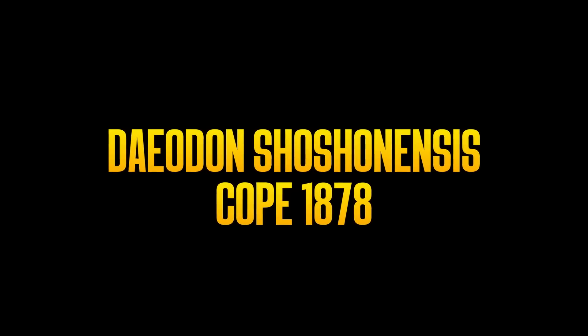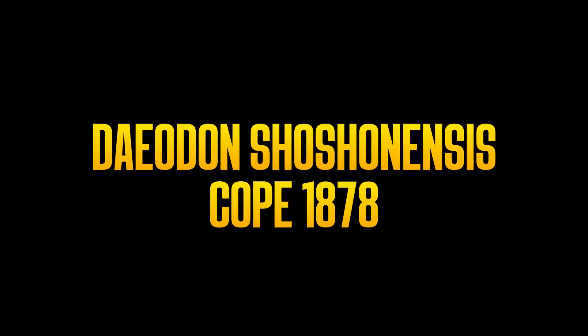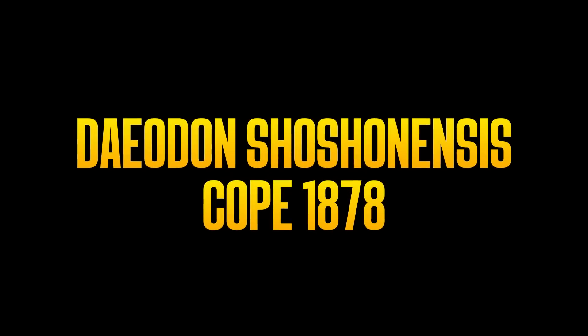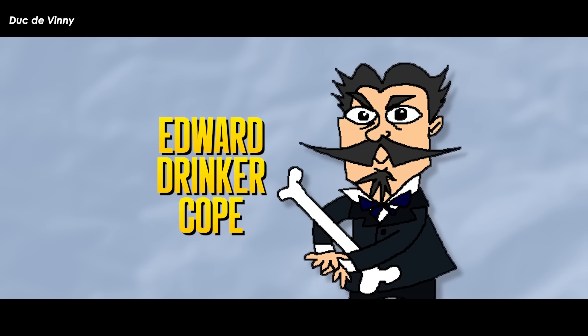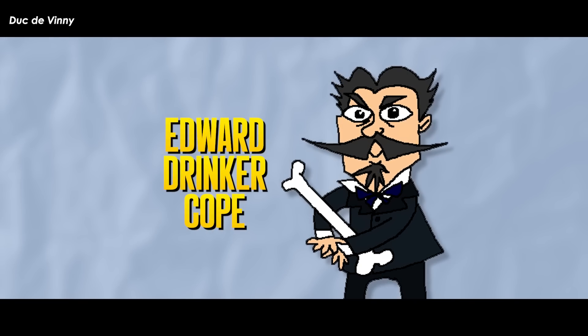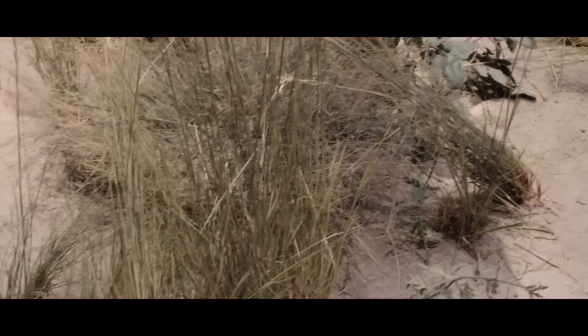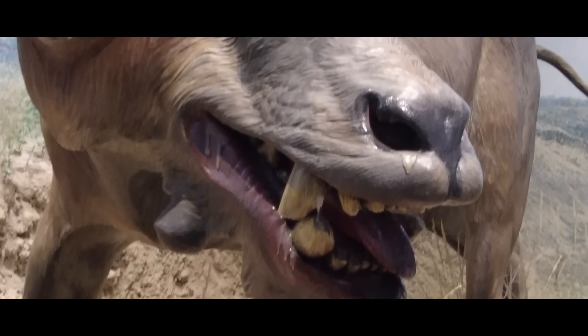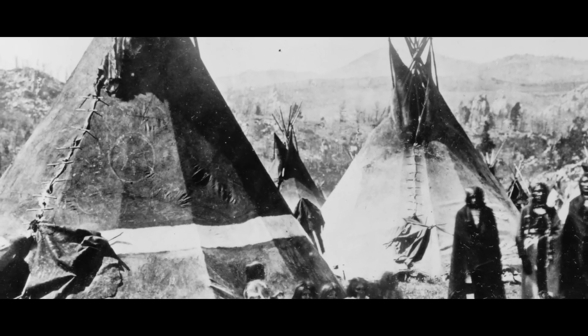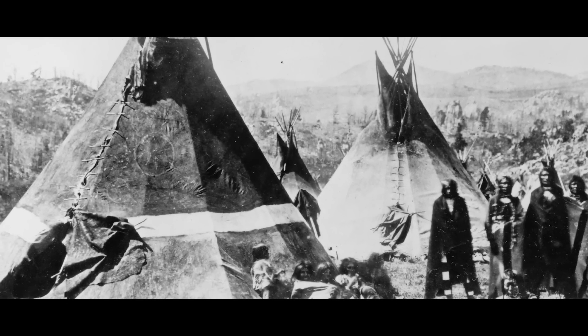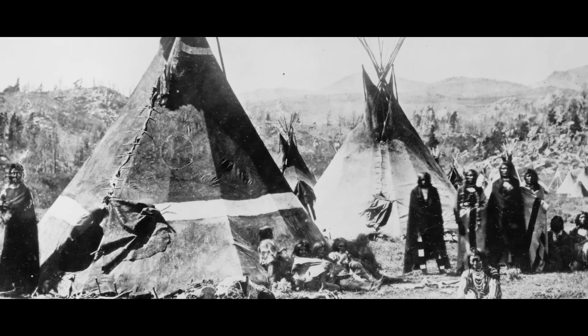Deodon shoshonensis, Cope, 1878. Deodon shoshonensis was officially named by Edward Drinker Cope, that racist rapscallion, in 1878. Deodon translates from the Greek words deos meaning hostile or dreadful, and odon meaning teeth, with the species name of shoshonensis paying homage to the Shoshone people of Wyoming, Idaho, Nevada, and Utah.